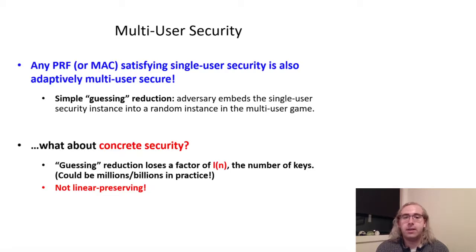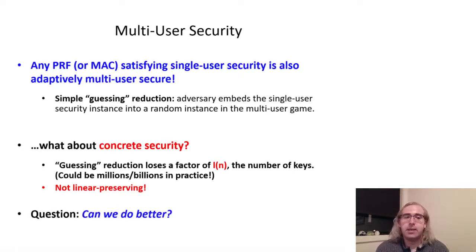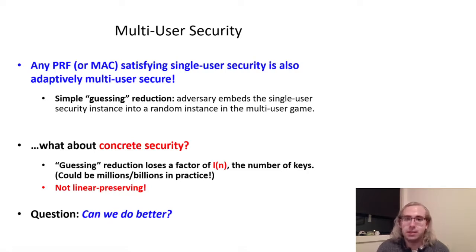So, unless the number of keys L of N is a priori bounded, this reduction isn't linear preserving and doesn't preserve asymptotic security necessarily. Even looking from a practical perspective, the security loss is extremely significant when we consider the fact that there could be 2 to the 30 or 2 to the 40 instances in use at once. So, the natural question to ask is: can we get more efficient reductions than this trivial guessing reduction? Specifically, towards constructing adaptively multi-user secure MACs or PRFs from standard assumptions, can we either find a better multi-key to single-key reduction than this one to avoid the security loss, or find an alternative efficient reduction that bypasses single-key security entirely?